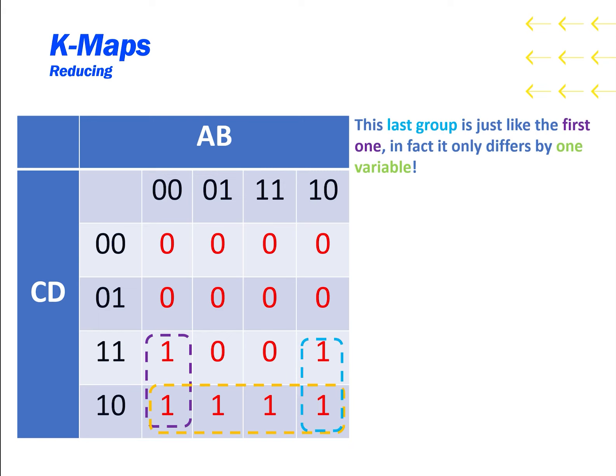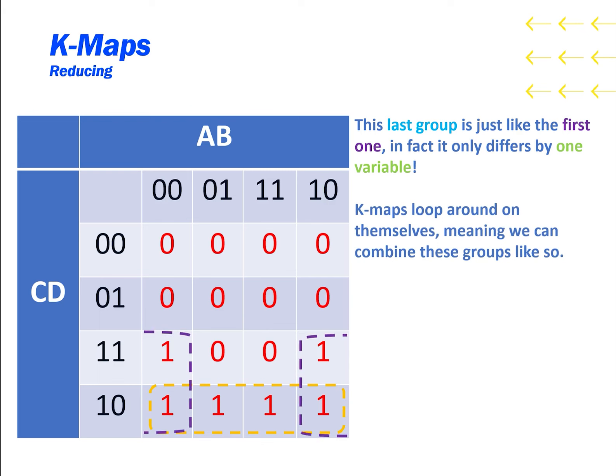This last group is just like the first one. In fact, it only differs by one variable. K-maps loop around on themselves, meaning we can combine the first and the last group like so. Now the complete and reduced function is B', C, or C, D'.